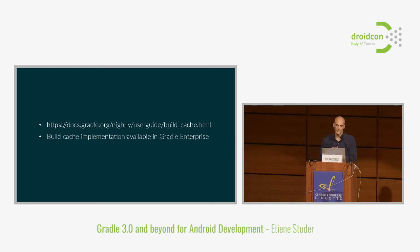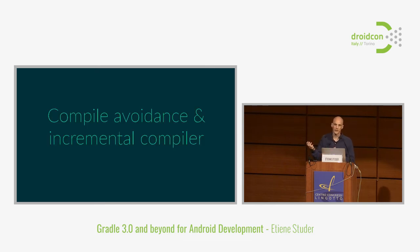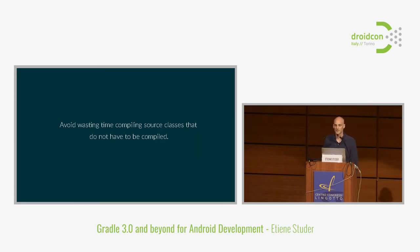Now let's look at something more fine-grained: we can look at a single change and decide whether something really needs to be recompiled. That's where compile avoidance, ABI change detection, and incremental compilation come into play. We want to avoid recompiling stuff when it doesn't need to be recompiled because it's not affected by the change.